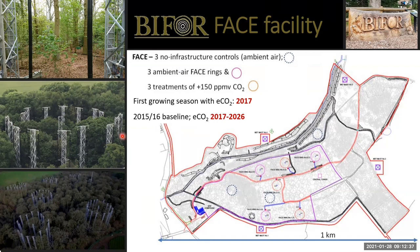There was no real change to the canopy structure, and it was a massive effort getting these things set up. We now have this wonderful FACE facility with nine different arrays split into three groups: three treatment arrays pumping in 150 parts per million of CO2 above ambient, three arrays pumping in ambient air as controls, and three no-infrastructure controls called ghost arrays. The first growing season was 2017; we baselined the site in 2015 and 2016. Most of the data I'll discuss is from 2017 to 2018.